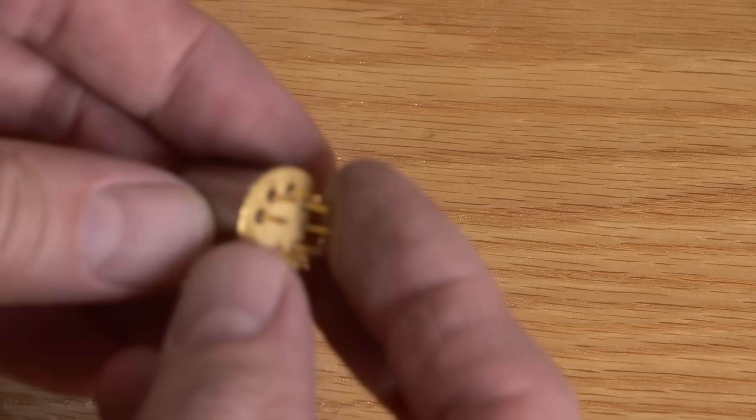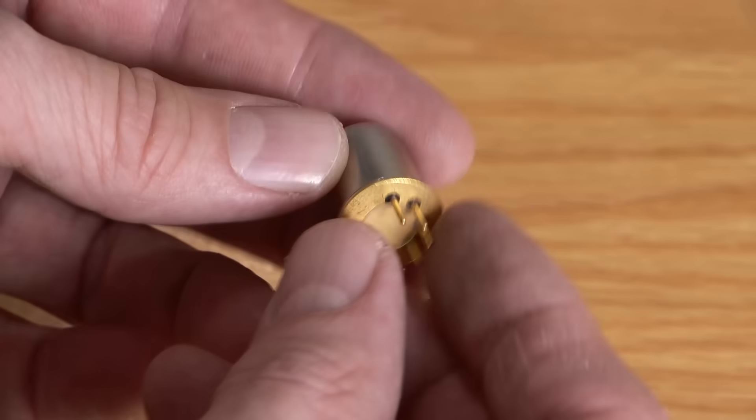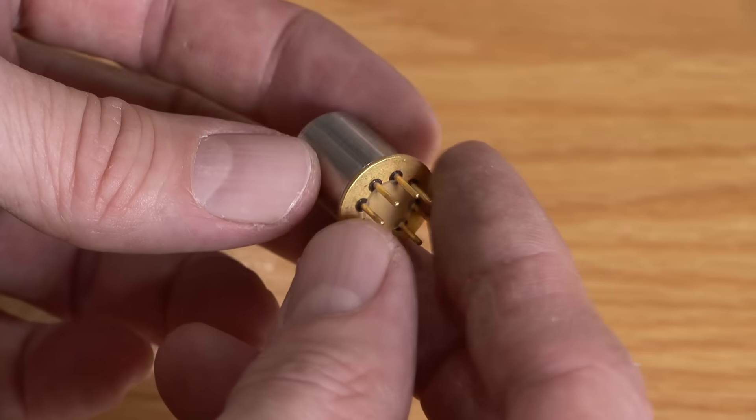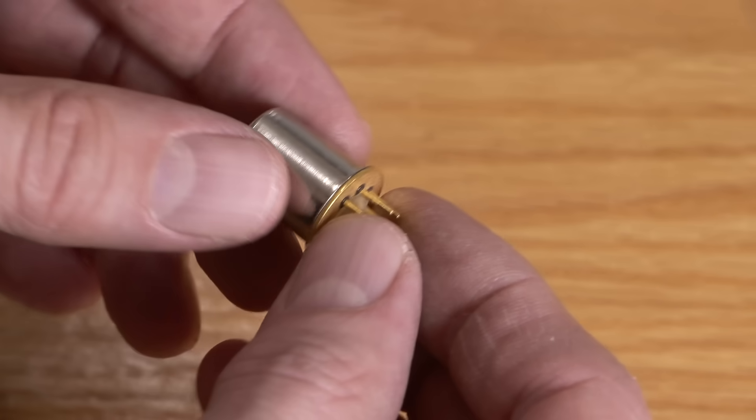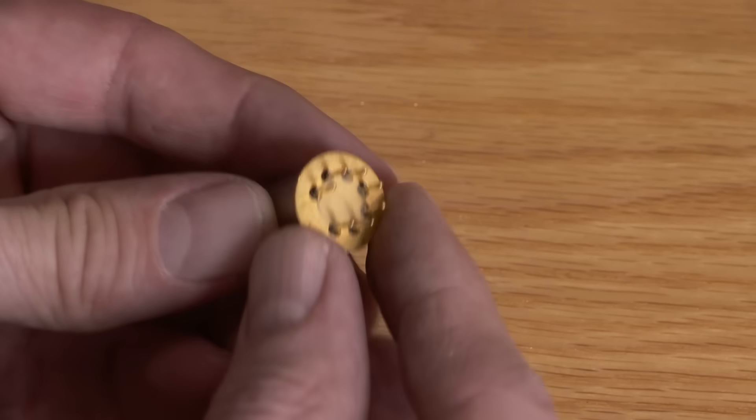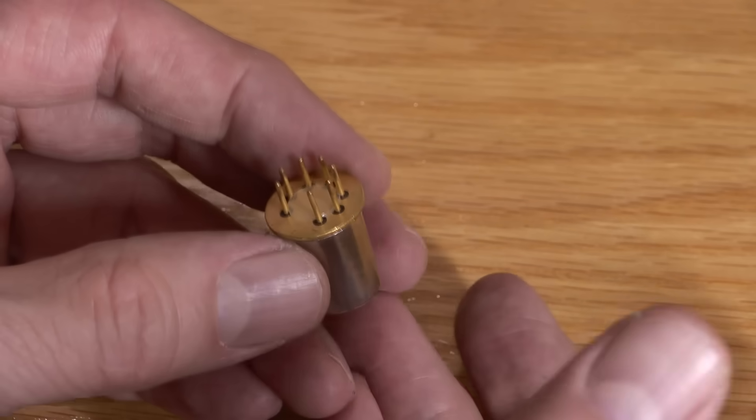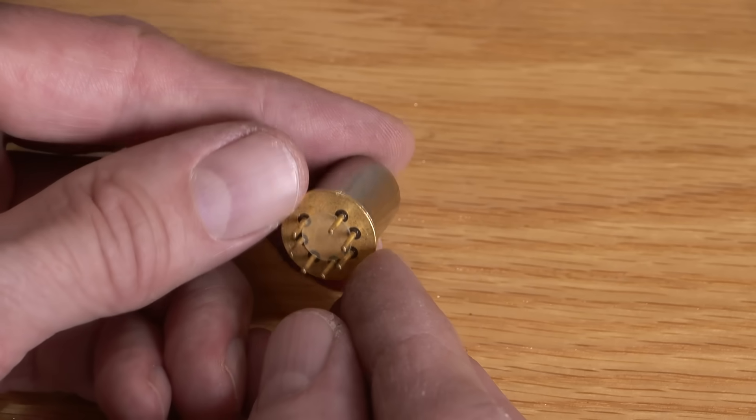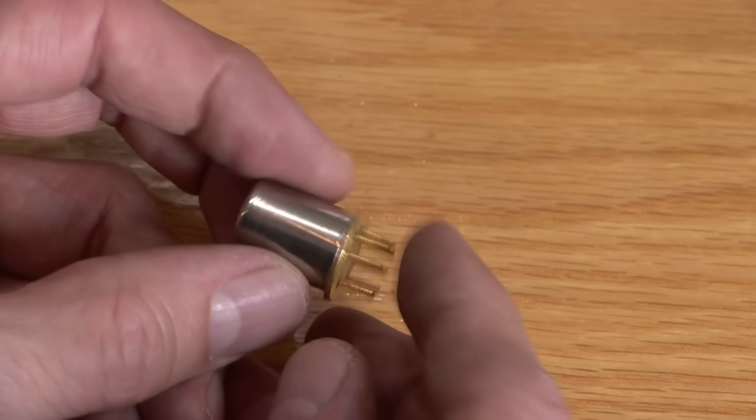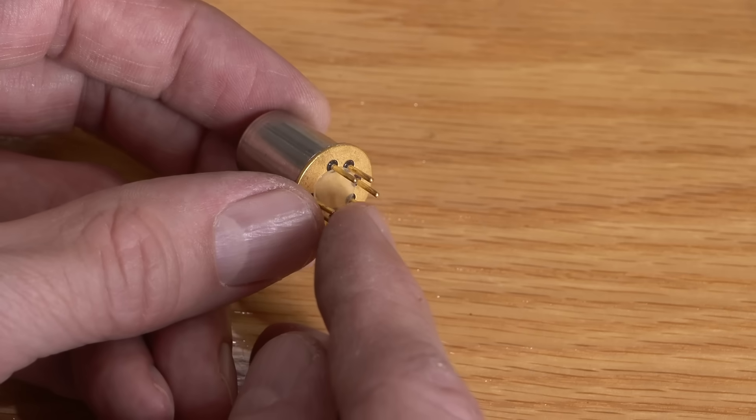This is known as a tubester, a modern or solid-state vacuum tube replacement. You would remove a tube, for example a 6AU6 or something like that, and plug this in. They make these for all sorts of different vacuum tubes. If you ever open up an older device and see a bunch of these plugged in where a vacuum tube is supposed to be, these things are known as tubesters.